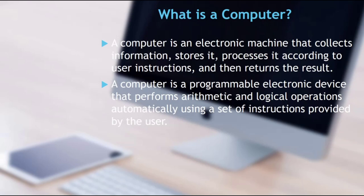So what is a computer? A computer is an electronic machine that collects information, stores and processes it according to user instructions, and then returns the results. In another way, a computer is a programmable electronic device that performs arithmetic and logical operations automatically using a set of instructions provided by the user. Simply put, a computer is an electronic device which takes input and gives an output.